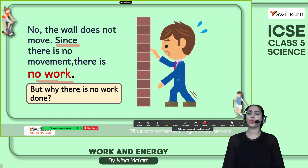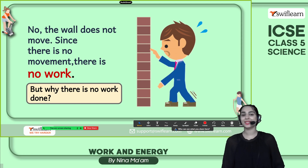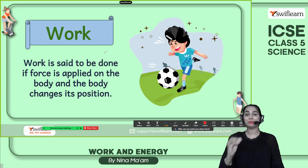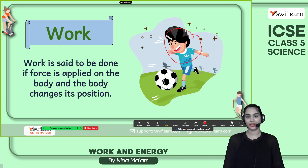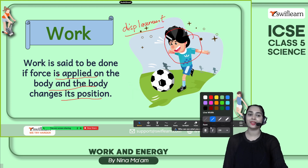But why is there no work done? The answer is simple: because the wall didn't move. Look at this boy — he applied some force by kicking the ball, and the ball moved forward. Work is said to be done if a force is applied on a body and the body changes its position. Displacement is mandatory. If there is no displacement or movement, we cannot consider it as work.